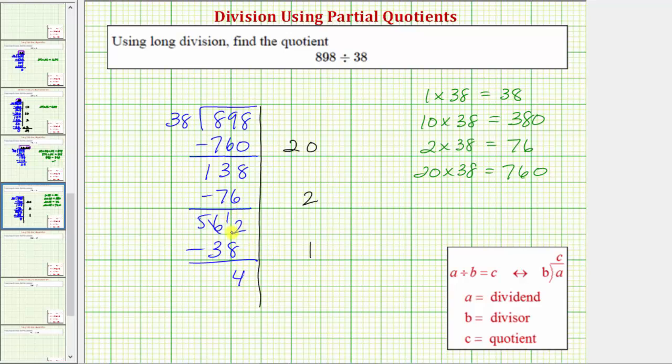And we subtract. 12 minus 8 is 4. 5 minus 3 is 2. Now that the difference is less than the divisor, we've completed the method of partial quotients. We just need to interpret the result. This last difference is the remainder. And to find the quotient, we sum the partial quotients on the right. 20 plus 2 plus 1 equals 23. So we have a quotient of 23 with a remainder of 24.